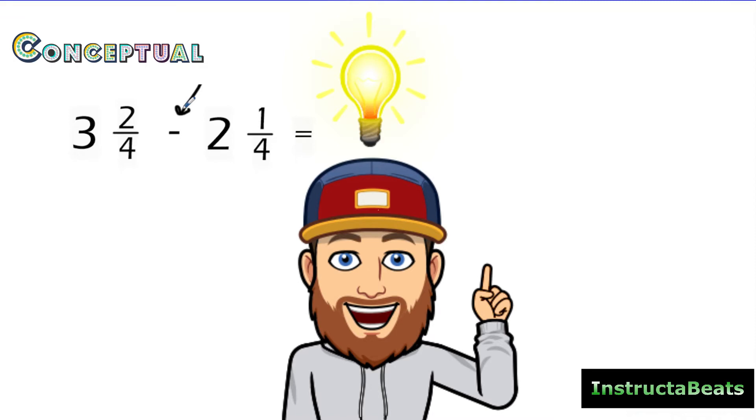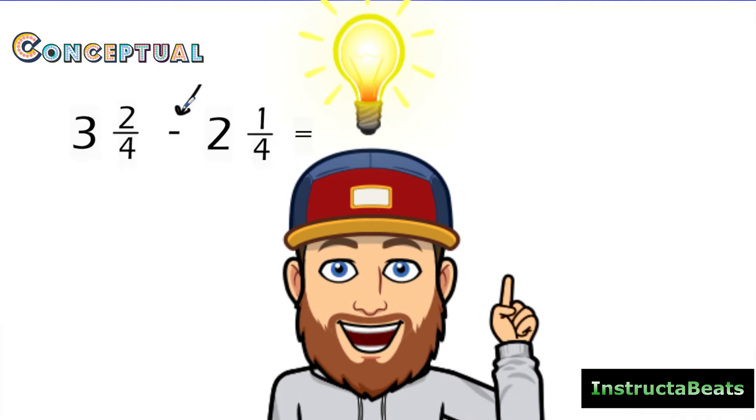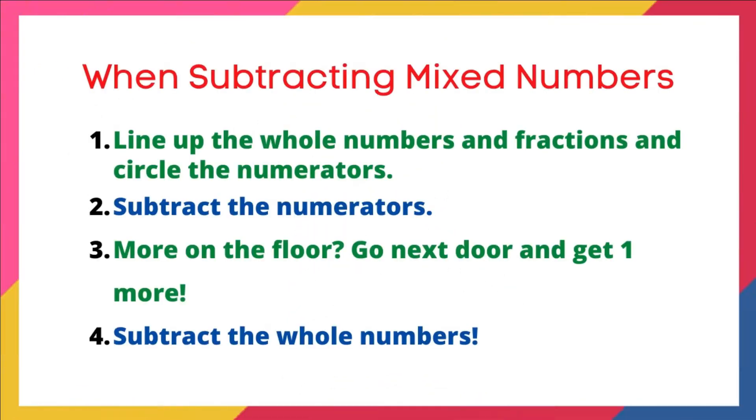So let's take a look at the steps for how we are going to subtract mixed numbers in this video, and then come back and solve this. All right, our steps when subtracting mixed numbers. Step number one, we're going to line up the whole numbers and fractions and circle the numerators. It sounds exactly like what we did when we did adding mixed numbers. Step number two, we're going to subtract the numerators.